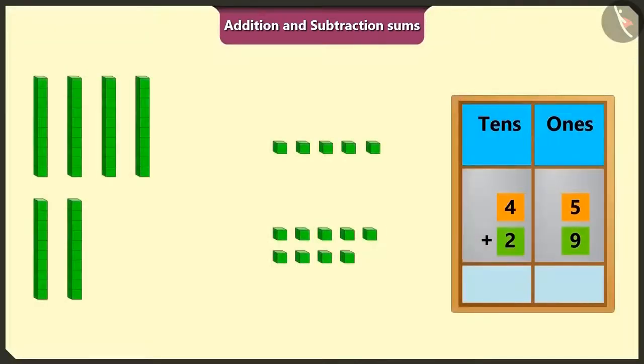Come on, let's put 45 and 29 in the box of ones and tens and do their addition. We have to add the numbers of the box of ones first.